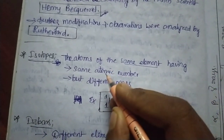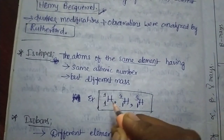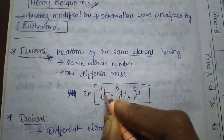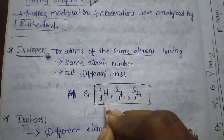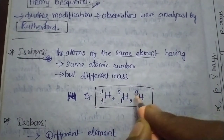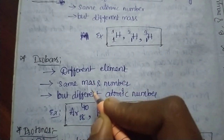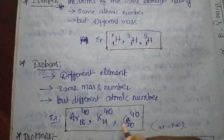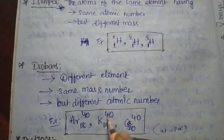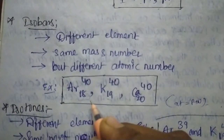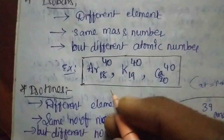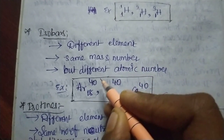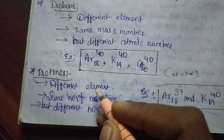Coming to isotopes: these are atoms of the same element having the same atomic number but different mass numbers — for example, hydrogen-1, hydrogen-2, hydrogen-3. Next, isobars: these are different elements such as argon, potassium, and calcium, all having the same mass number of 40 but different atomic numbers — 18, 19, and 20 respectively.